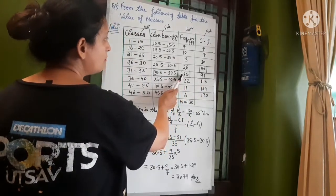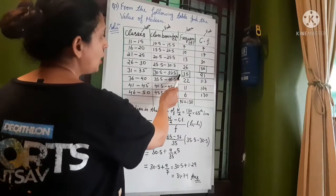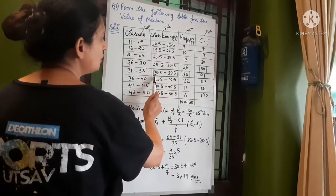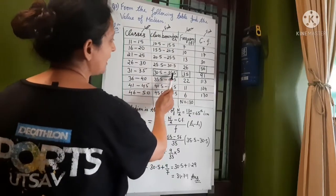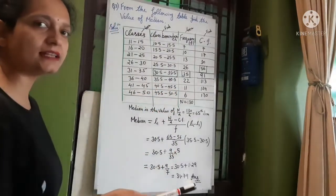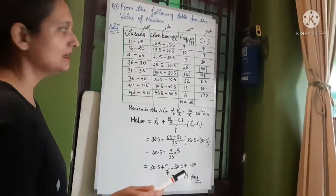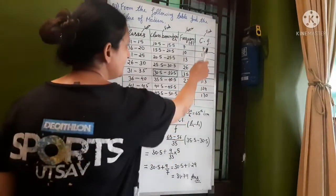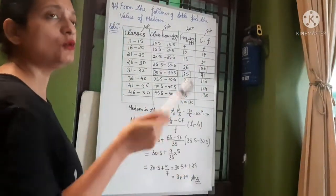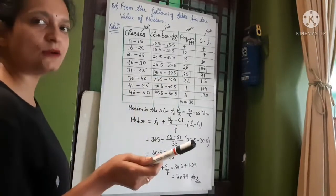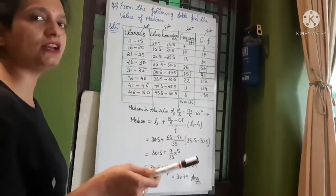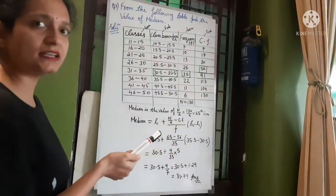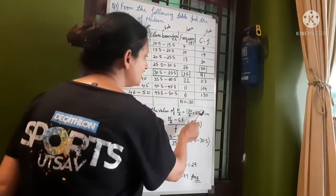35 is the frequency and this is the class interval 30.5 to 35.5 is lower class and upper class. Here we can see cumulative frequency, where is the class boundary where you get l1 and l2. Get from l1 frequency is this value, value is this.